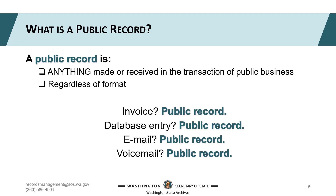The Revised Code of Washington, or RCW, is the legal framework that governs the work we do as employees of state and local government agencies. Chapter 40.14 of the RCW tells you how to manage, destroy, or transfer public records. It also provides a straightforward definition of a public record. According to the RCW, public records are anything made or received in the transaction of public business.